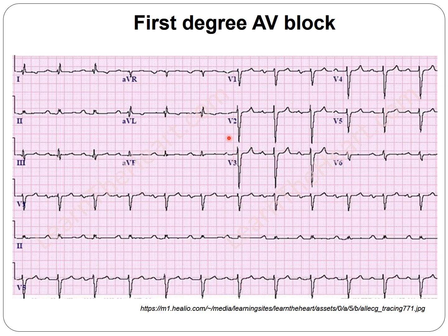Looking at this next graph, it's also rhythmic with a rate around 75. We see a positive P wave in lead 2 and negative in AVR, representing sinus activation. Every P gets conducted because every P is followed by a QRS complex. However, the PR interval is longer than normal.